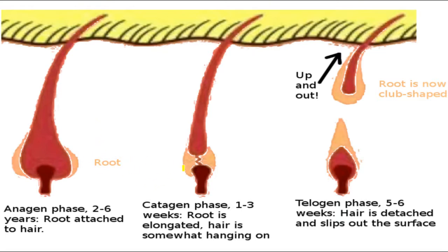The catagen phase is when the hair starts getting detached. The root is a little elongated because it's being stretched between the cells that produce the hair and the actual hair as it's releasing. Then it falls out completely in the telogen phase, and here you have the root. You have a lot less of the root and it's not easy to find cells with DNA. So in this case you usually cannot find DNA cells with regular DNA. The hair itself will have mitochondrial DNA, but we'll look at that a little bit later.